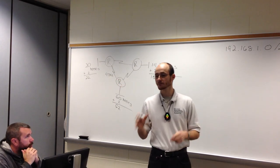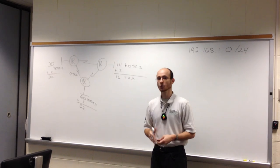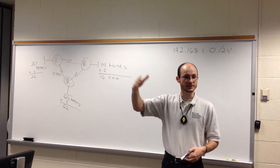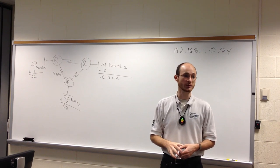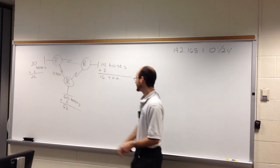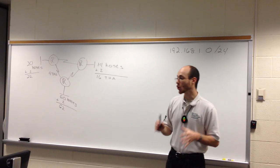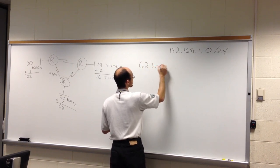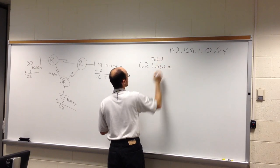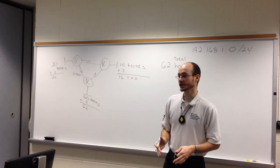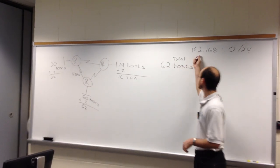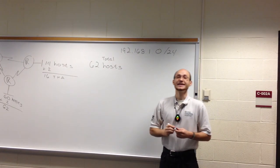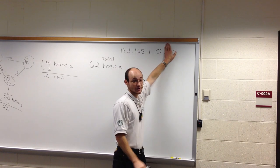I've converted usable host ranges to total host ranges. With fixed-width subnetting, you work with the widest network to set the tone. My widest is 62 total hosts. The fourth octet is representing the host portion — you know this because the slash 24 tells you the first 24 bits represent the network.